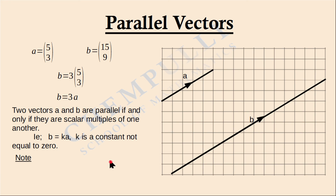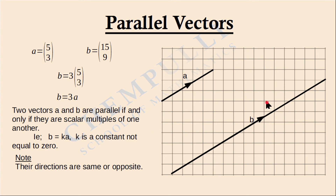One important note: the directions of parallel vectors are the same or opposite. In this case, vector A and vector B both have the same direction. But if k is a negative number, then we will get the opposite direction. For example, if vector B were in the opposite direction, it would be (-15, -9), and we could take negative 3 outside — meaning k would be a negative number. So the directions of parallel vectors are the same or opposite.